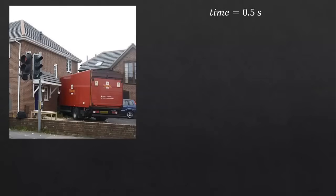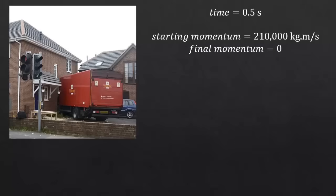Our change of momentum is the same as before. Why? Well, the starting momentum is 210,000 kilogram meters per second, and the final momentum is zero because the lorry has stopped. So, our change of momentum is, again, 210,000 kilogram meters per second.